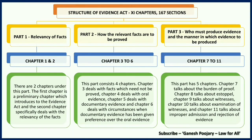The Indian Evidence Act 1872 has 11 chapters and 167 sections. We can divide these 11 chapters into three different parts. In the first part, we are studying relevancy of facts. In Part 2, we are understanding how the relevant facts are to be proved. And in Part 3, who must produce evidence and the manner in which evidence is to be produced.